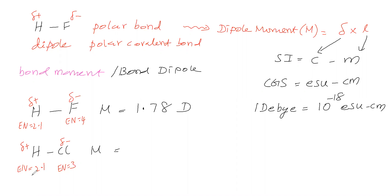We might ask: why do we assign electronegativity 2.1 to hydrogen in both cases? Pauling calculated electronegativity based on bond energies. He arbitrarily assumed hydrogen's electronegativity as 2.1 and fluorine's as 4, then proceeded. In reality, the electronegativity of hydrogen varies in different compounds, but it is not practical to assign a separate value for each of the millions of compounds hydrogen can form.